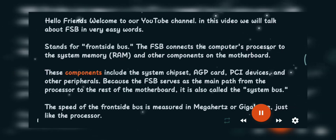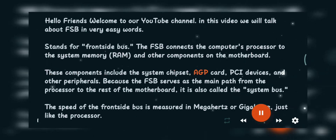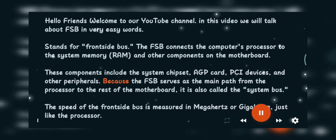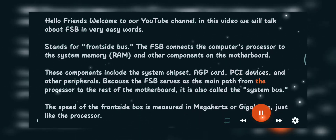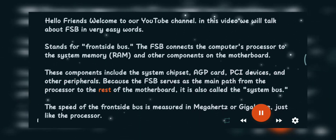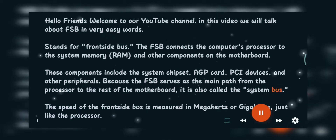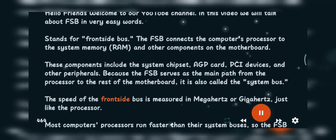These components include the system chipset, AGP card, PCI devices, and other peripherals. Because the FSB serves as the main path from the processor to the rest of the motherboard, it is also called the system bus.